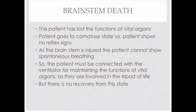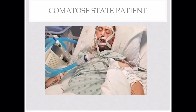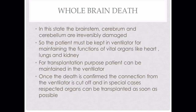There is no recovery from brain stem death. In comatose state patients, the eyes are closed, indicating the patient lacks both awareness and consciousness, and the patient is connected to a ventilator showing no spontaneous breathing. The third type is whole brain death, where the brain stem, cerebrum, and cerebellum are all irreversibly damaged. The patient must be kept on a ventilator to maintain vital organ functions. For transplantation purposes, the patient can be maintained on the ventilator, but once death is confirmed, the ventilator connection is cut off and organs can be transplanted as soon as possible.